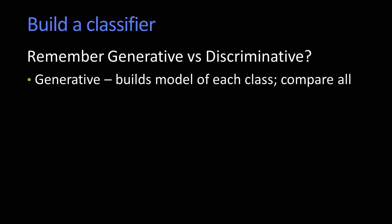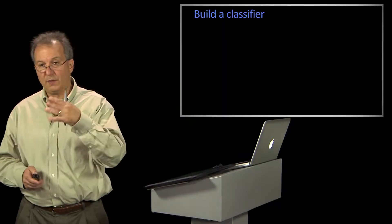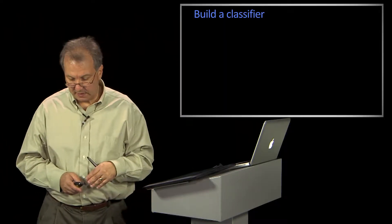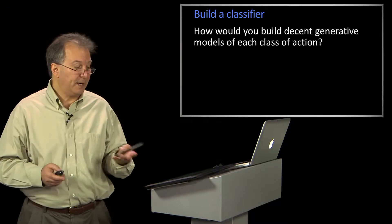Remember generative versus discriminative. Generative: I build a model of each class and then I compare it against all of them. Discriminative: I build a model of the boundary between the classes. We've talked a bunch about building discriminative ones. Let's talk again about building generative.